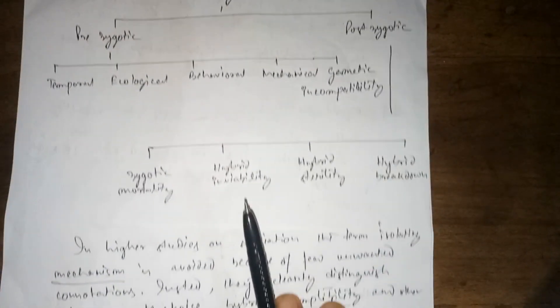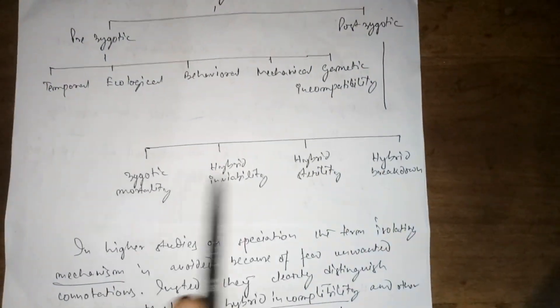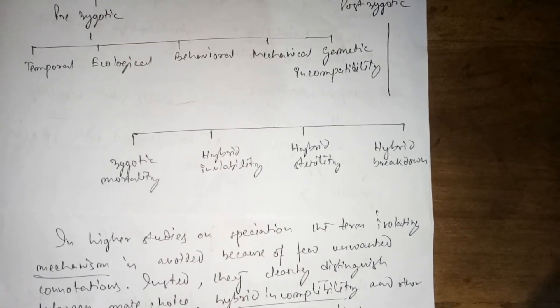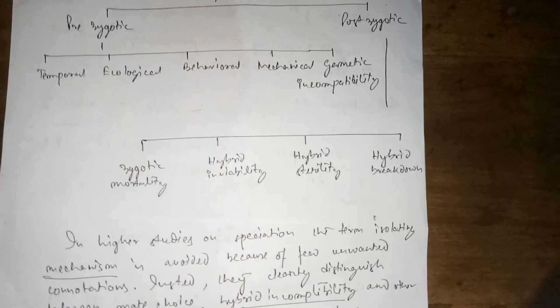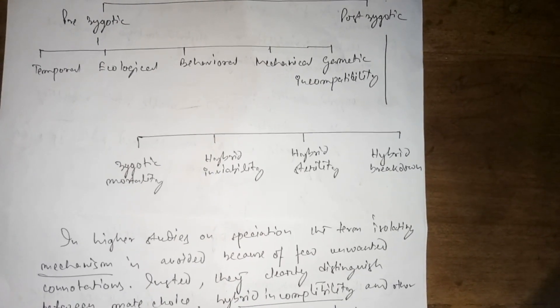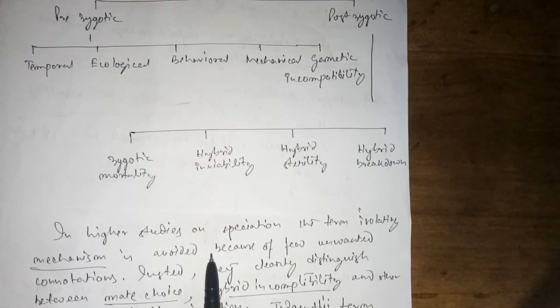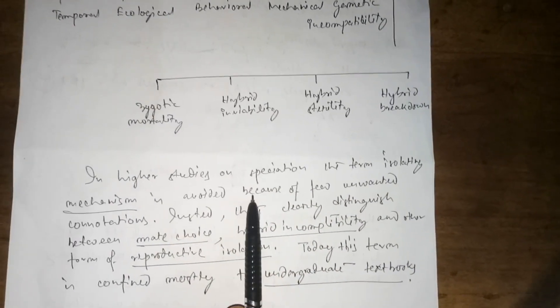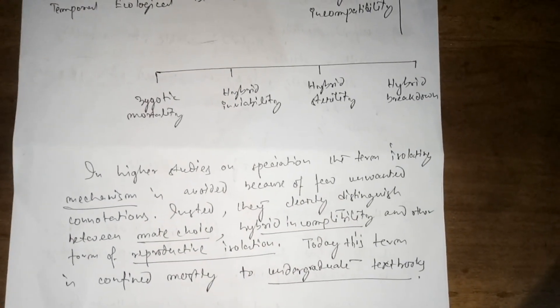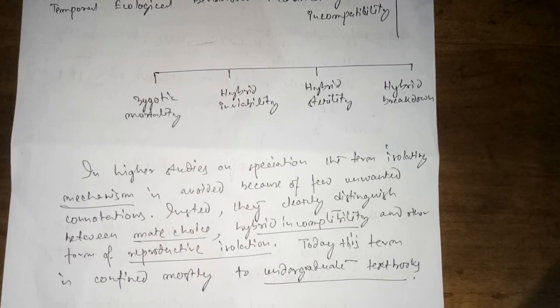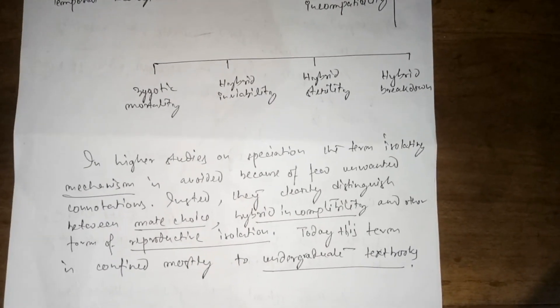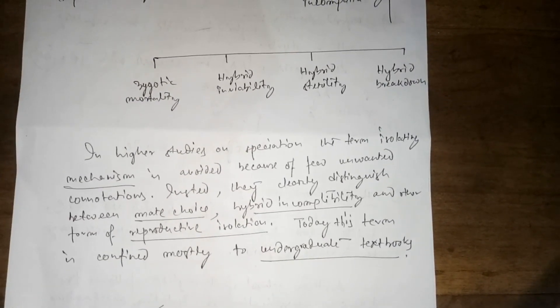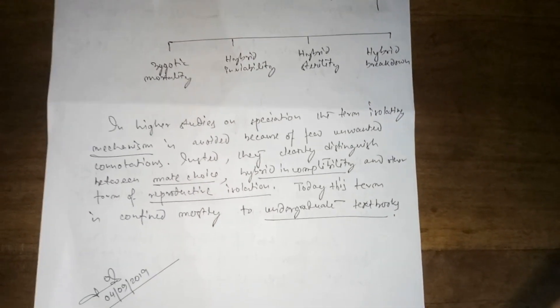In higher studies on speciation, the term 'isolating mechanism' is avoided because of a few unwanted connotations. Instead, researchers clearly distinguish between mate choice, hybrid incompatibility, and other forms of reproductive isolation. Today, the term 'isolating mechanism' is confined mostly to undergraduate textbooks.